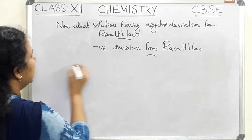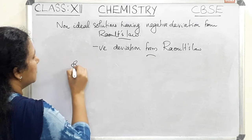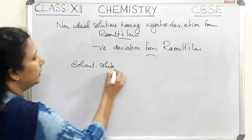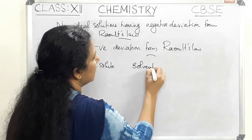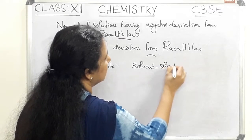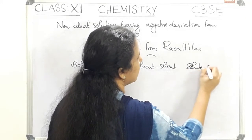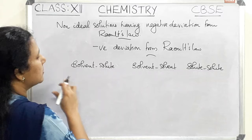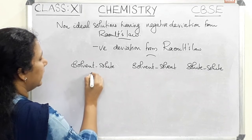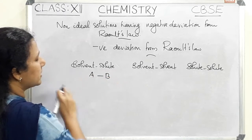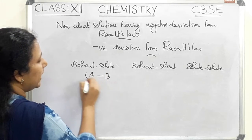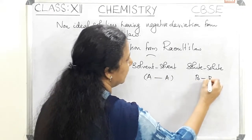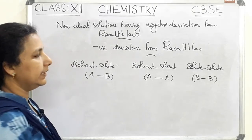In the case of solutions, we know that there is solvent-solute interaction, solvent-solvent interaction, and solute-solute interaction. In the case of non-ideal solutions also, we can see there is solvent-solute interaction — that means A-B interaction. If solvent is represented by A and solute is represented by B, there is A-B interaction, A-A interaction, and also B-B interactions.